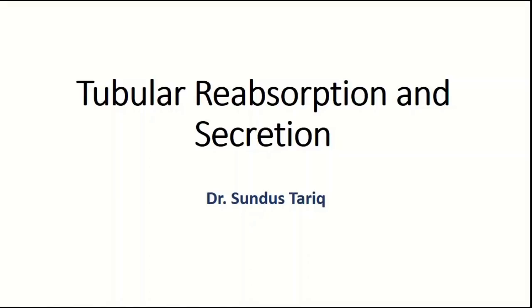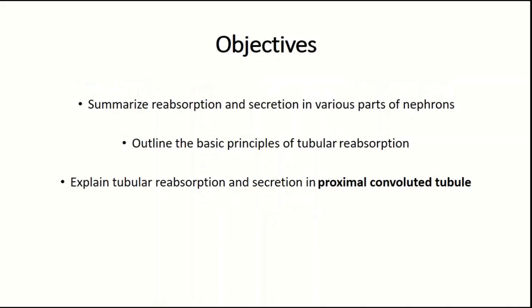In this video we will discuss the very important second step in urine formation: tubular reabsorption and secretion. The first important step was glomerular filtration, which we have already discussed in previous videos. The objectives for this video are: first, we will summarize reabsorption and secretion in various parts of the nephrons, then we will outline the basic principles of tubular reabsorption, and we will explain tubular reabsorption and secretion in detail in the proximal convoluted tubule.